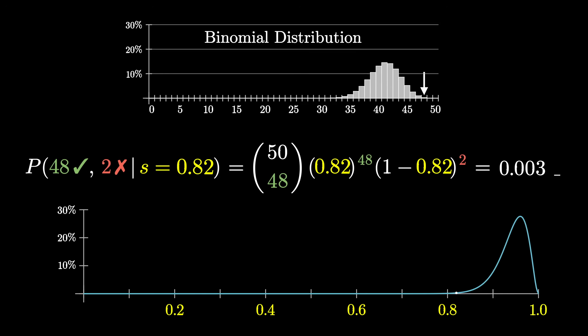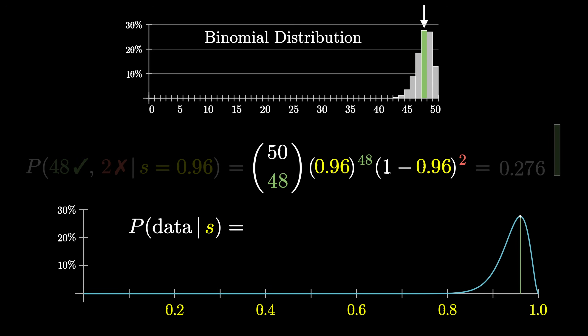This plot we have on the bottom is a great start to getting a more quantitative description for which values of s feel more or less plausible. Written down as a formula, what I want you to remember is that as a function of the success rate s, the curve looks like some constant times s to the number of positive reviews times 1 minus s to the number of negative reviews.